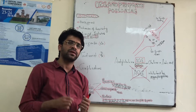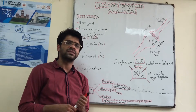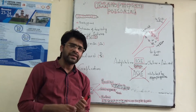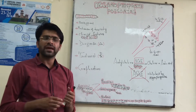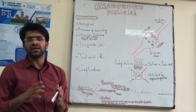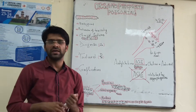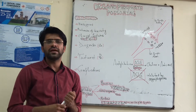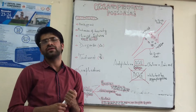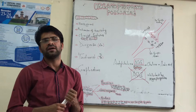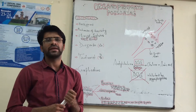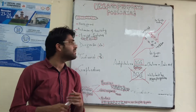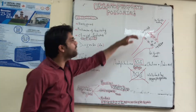Organophosphate is actually a chemical compound that is formed whenever an alcohol is reacted with phosphoric acid, and the resulting product is known as Organophosphate. To understand the mechanism of toxicity of Organophosphate, I would like all of you to recall the basic pathological concepts of Acetylcholine release and its inactivation.